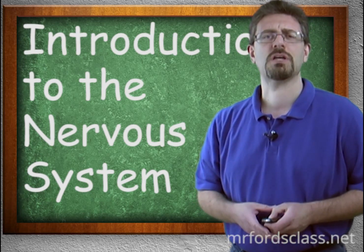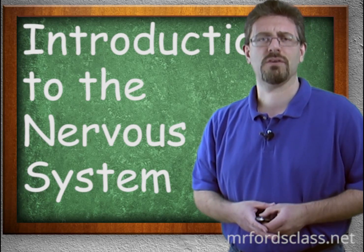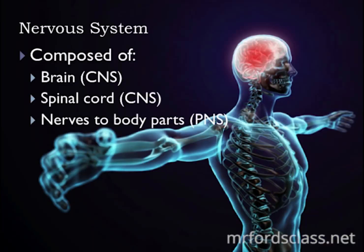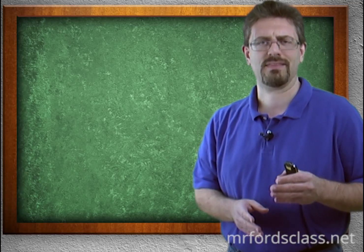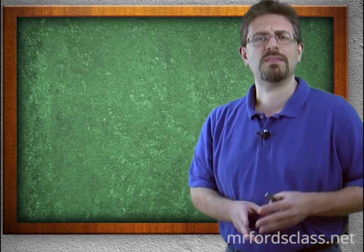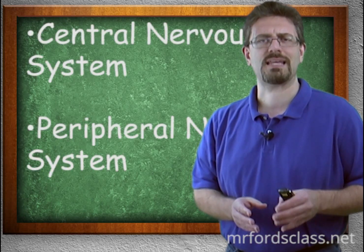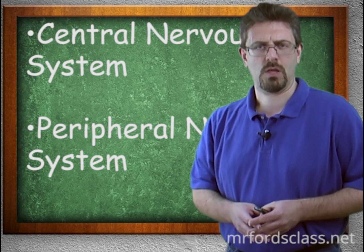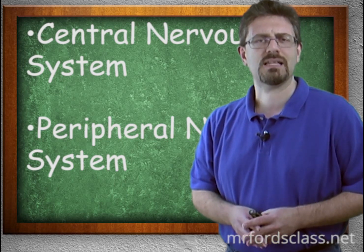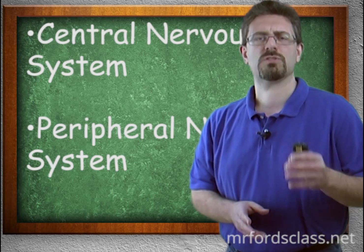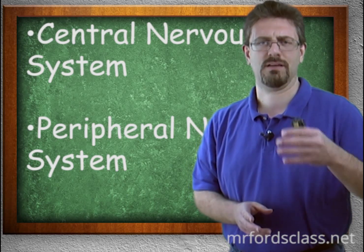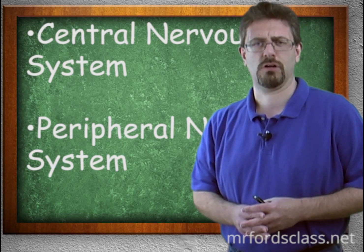Let's begin by describing what is the nervous system. The nervous system is composed of the brain, the spinal cord, and the nerves to the rest of the body. You'll notice that on that graphic we had the CNS and the PNS. The CNS stands for the central nervous system, while the PNS stands for the peripheral nervous system. We'll get into that in a lot more detail when we start talking about the second series, the larger structures of the nervous system.